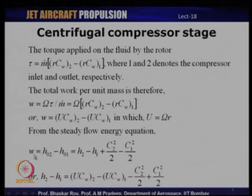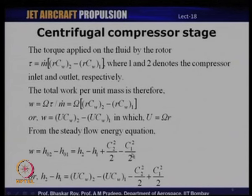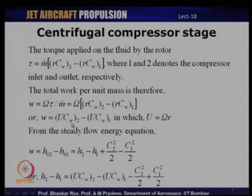From the steady flow energy equation, the work done per unit mass equals the enthalpy rise across the impeller: H₀₂ − H₀₁ = (H₂ − H₁) + (C₂²/2 − C₁²/2), where C₂ and C₁ are the absolute velocities at the outlet and inlet of the rotor respectively. Since H₀₂ − H₀₁ = U·Cw₂ − U·Cw₁, the static enthalpy rise H₂ − H₁ = U·Cw₂ − U·Cw₁ − C₂²/2 + C₁²/2.